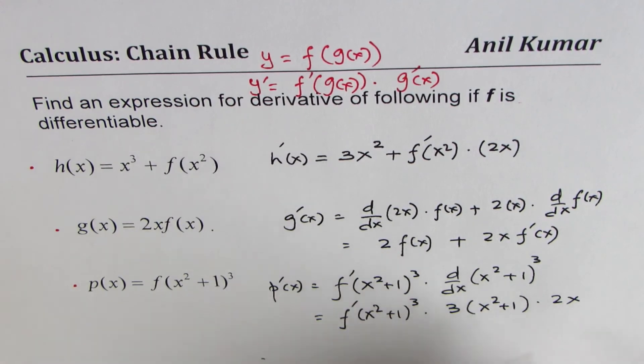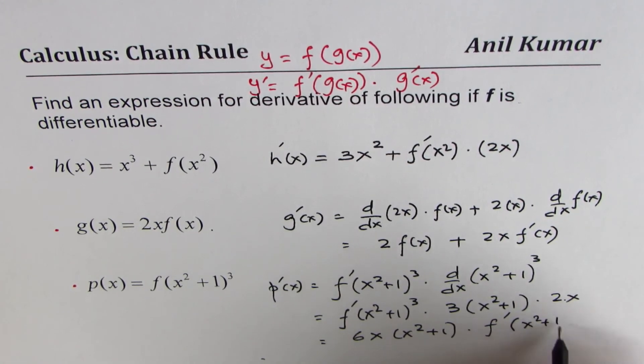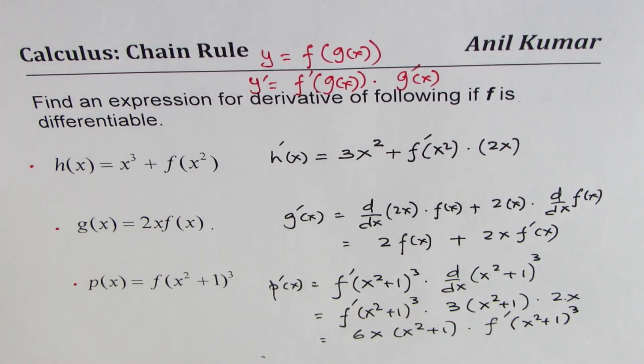So don't forget that. Finally, we could write our answer as 2 times 3 is 6, so 6x times x squared plus 1 times the derivative of x squared plus 1 whole cube, the function itself. So that is how you could find the derivative of composite functions.